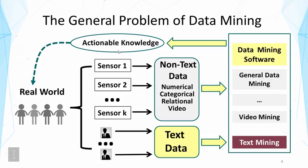The data mining problem is basically to turn all the data into actionable knowledge that we can take advantage of to change the real world for the better. This means the data mining problem takes a lot of data as input and gives actionable knowledge as output. Inside the data mining module, there are a number of different kinds of mining algorithms, because for different kinds of data we generally need different algorithms. For example, video data might require computer vision to understand video content, which facilitates more effective mining. There are also general algorithms applicable to all kinds of data, but for a particular kind of data we generally want to develop special algorithms as well. This course will cover specialized algorithms that are particularly useful for mining text data.